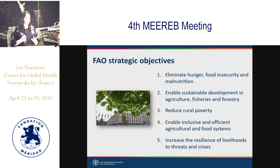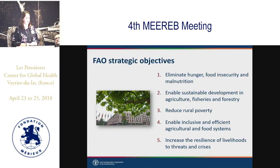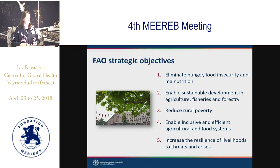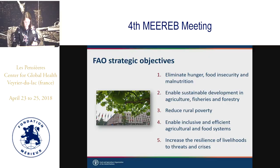You can see that rabies can fit into some of these different objectives. A lot of our work falls under strategic objective number three, reducing rural poverty. As we've heard quite a bit today, it's a disease that affects the rural poor in a disproportionate way. But it also affects hunger and food insecurity — we heard this morning about cattle coming down with rabies, and many communities rely on their cattle as a food source and source of income.